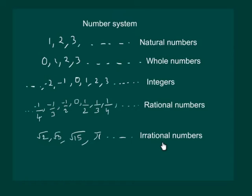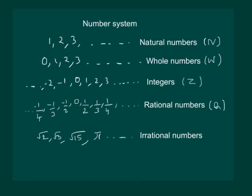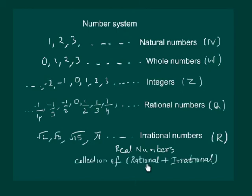Need not worry, we shall study irrational numbers in detail. But before moving to irrational numbers, we shall recall rational numbers. Note that from now on we will denote the collection of all natural numbers by N, all whole numbers by W, all integers by Z, all rational numbers by Q. The collection of all irrational numbers will be included in the collection of all real numbers, represented by R. Here R denotes real numbers, which is a collection of rational numbers plus irrational numbers.